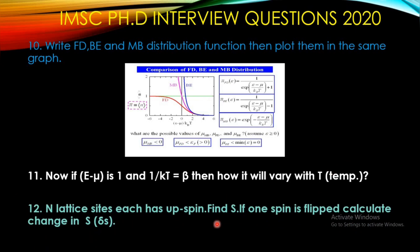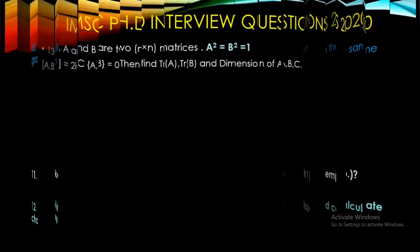The next question: there are N lattice sites and each has up spin. They asked to calculate the entropy S, and if one spin is flipped, to calculate the change in S. This problem can be solved using mean field theory, so you need to know mean field theory to solve this kind of problem.